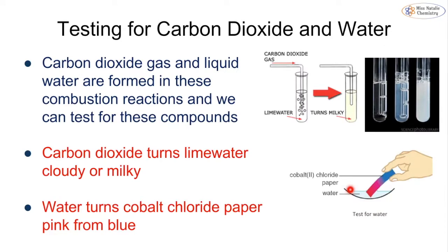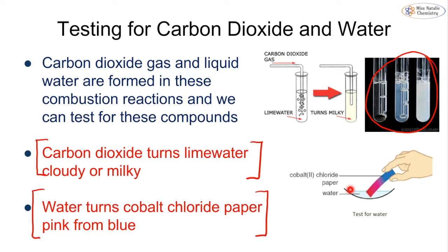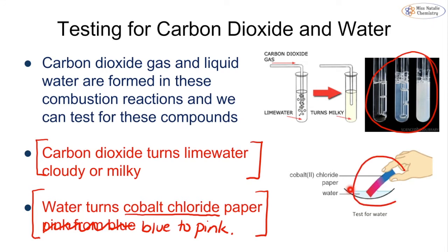It's important we can confirm we've made carbon dioxide and water, so we carry out tests — you need to know these two tests for your assessment. Carbon dioxide will turn limewater cloudy or milky; you may have done this experiment blowing through a straw into limewater. Water will turn a special paper called cobalt chloride paper from blue to pink when it comes into contact with water.